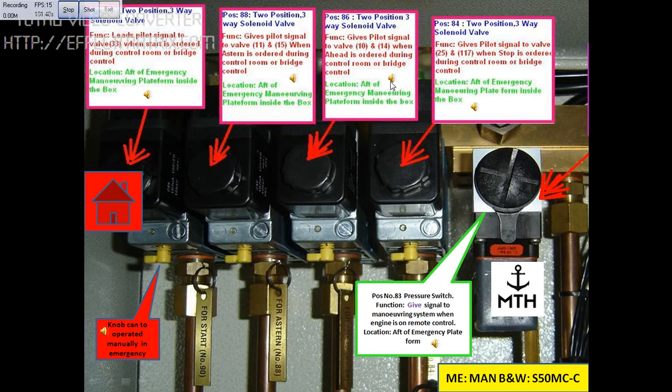This block is position number 86, which is a two position three-way solenoid valve. The function of this valve is to give a pilot signal to valve number 10 and to valve number 14 when ahead is ordered either from control room or from bridge control.